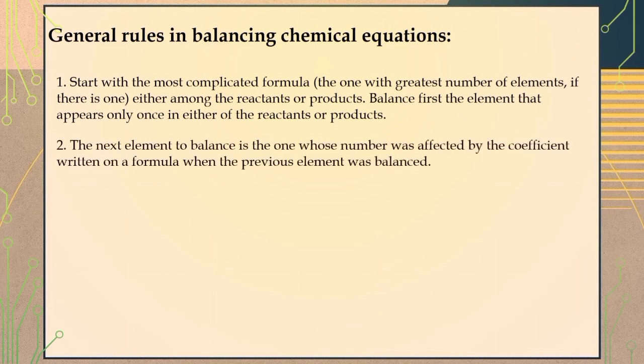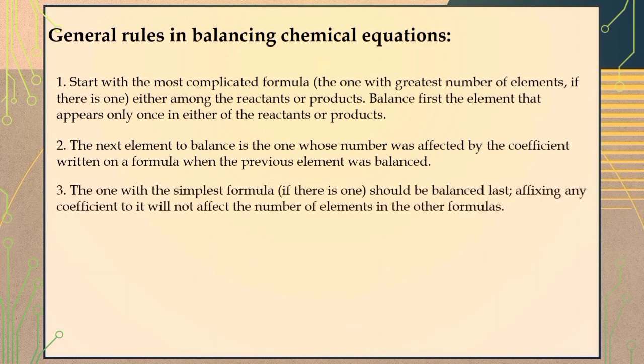Number two: the next element to balance is the one whose number was affected by the coefficient written on a formula when the previous element was balanced. Number three: the one with the simplest formula, if there is one, should be balanced last — affixing any coefficient to it will not affect the number of elements in the other formulas.